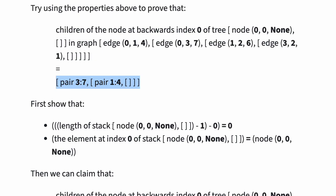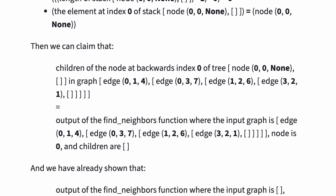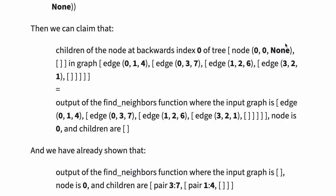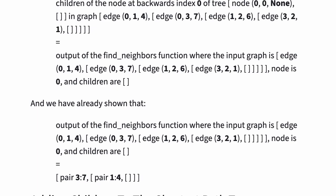First, we can show that the length of stack node(0,0,none) minus 1 minus 0 is equal to 0, and the element at index 0 of stack node(0,0,none) is equal to node(0,0,none). Then we can claim that the children of the node at backwards index 0 of tree node(0,0,none) in graph edge(0,1,4), (0,3,7), (1,2,6), and (3,2,1) is equal to the output of the find neighbors function where the input graph is the same set of edges, node is 0, and children are empty. We have already shown that this output equals the stack pair(3,7) and pair(1,4).